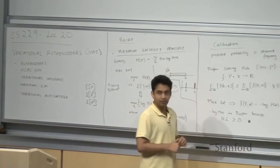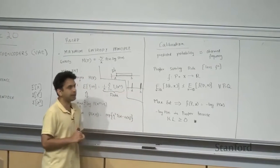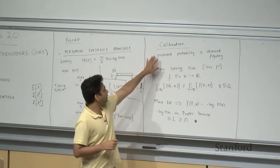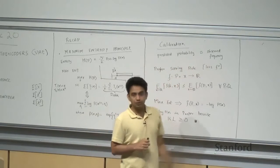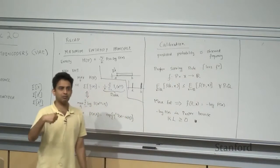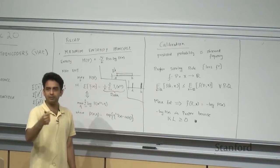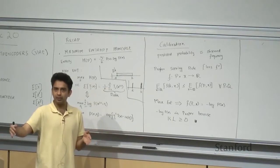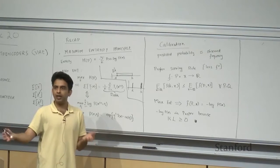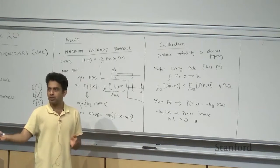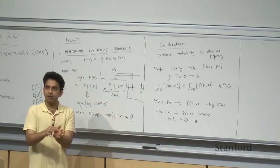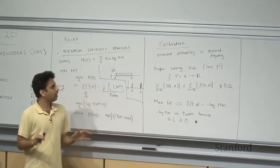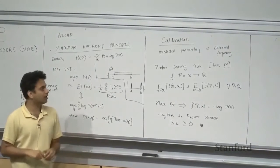We also covered calibration, which is super important if you're building real-world predictive or forecasting models. Calibration is the property where the predicted probabilities match the observed frequencies. For example, when you say some outcome has a probability of 80% — say it will rain tomorrow with probability 80% — then among all predictions where the predicted probability was 80%, approximately 0.8 fraction of the true outcomes should have actually occurred. That's when a model is said to be well-calibrated.